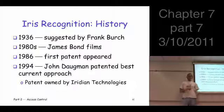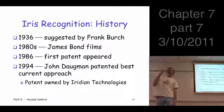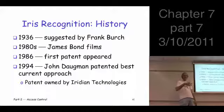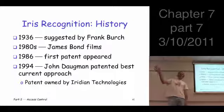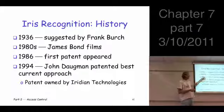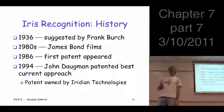I forget which of the James Bond films, but there's at least one from the 1980s which has some iris scanning, or at least they look at the eye and do some scan based on the eye for admission to some bad guys lab or something. 1986, first patents appeared. Why is that an important date when patents started appearing? What does that tell you?